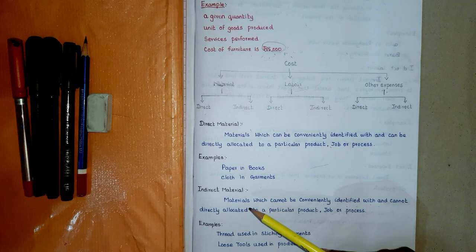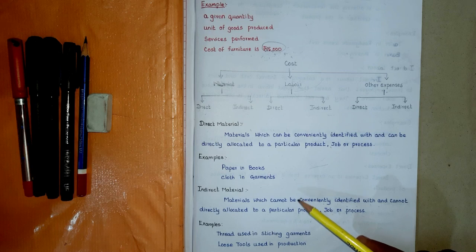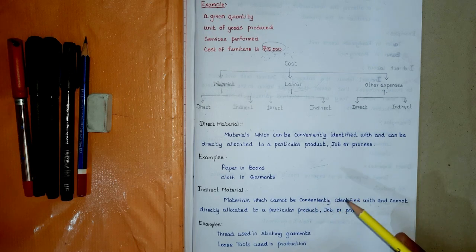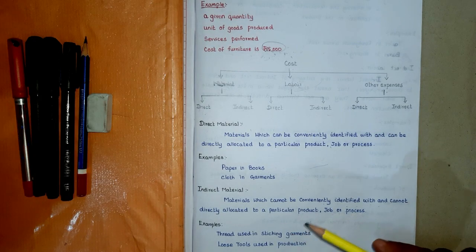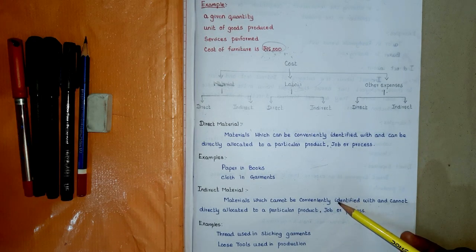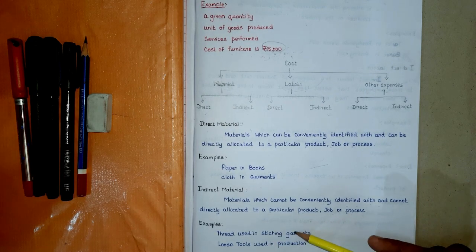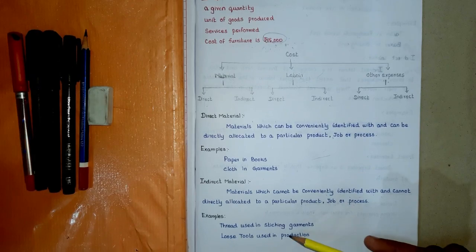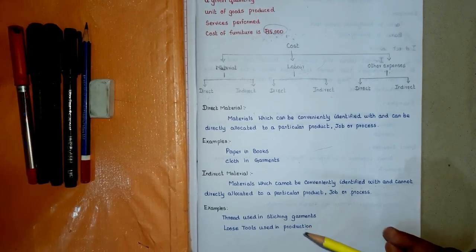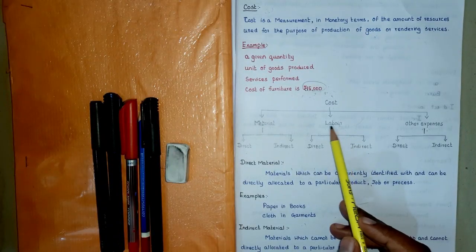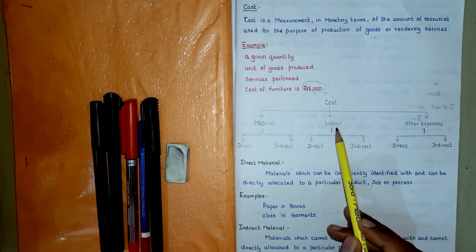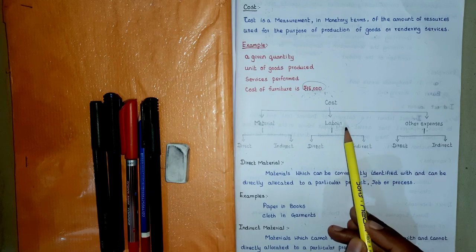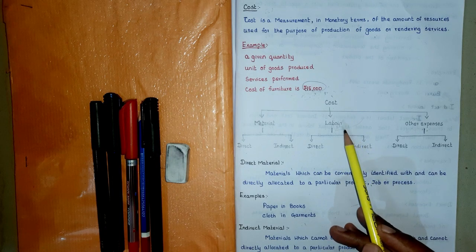The next concept is indirect material. Here the material which are used in the production of the final product indirectly. These materials cannot be directly measured and conveniently charged to the cost of production. Example: thread used in stitching garments. Thread may be classified as indirect material.